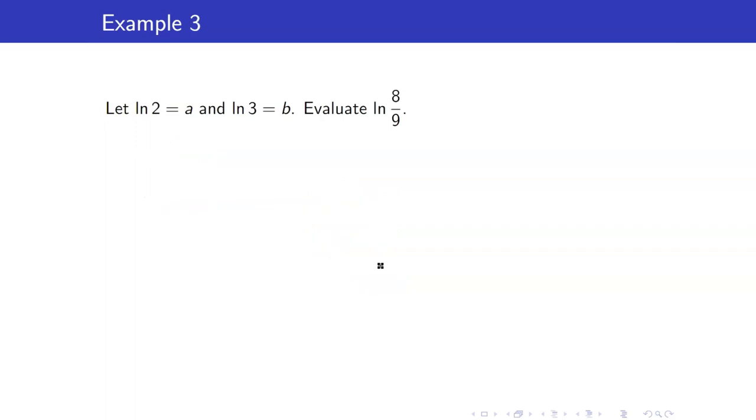Next, we want to evaluate ln(8/9). But we are given the values of ln(2) and ln(3). We want to express this in terms of a and b. How do we express ln(8/9) using ln(2) and ln(3)? Remember that our goal is something like this: we have ln(2), ln(3), and some coefficients here.